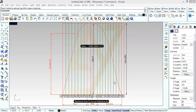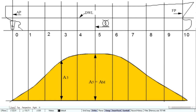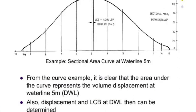The longitudinal positions on this curve represent sectional area values. The integrated area under the sectional area curve gives the displaced volume, which is the displacement of the ship, and the centre of this area gives the centre of volume of the ship, which is the longitudinal centre of buoyancy.